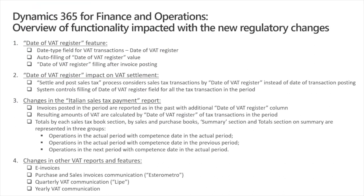By default, this parameter is not marked. This means that VAT settlement and reporting will be working as in the past before the invoice simplification. And even filling in a Date of VAT Register for the tax transactions will not be considered by the system differently before the Date of VAT Register parameter in General Ledger is marked. Thus, when the company decides to work by Date of VAT Register for VAT reporting purposes, the Date of VAT Register parameter in General Ledger must be marked.